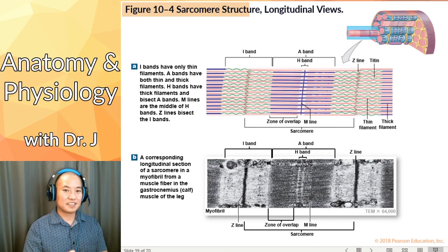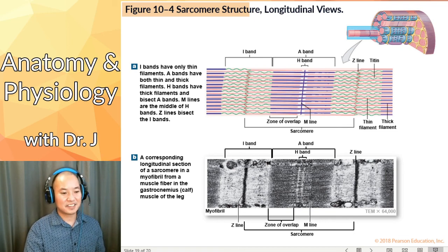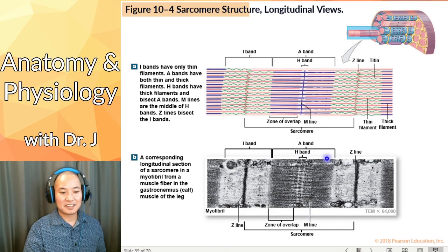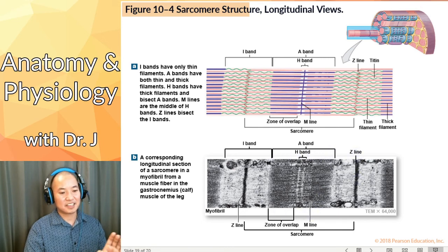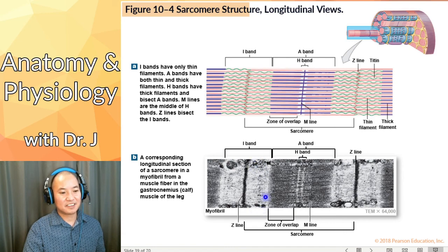Under the electron microscope, the detail is about as fine as you can get. This probably won't be on the exam in that form, but notice: the I bands are lighter and the A bands are darker.